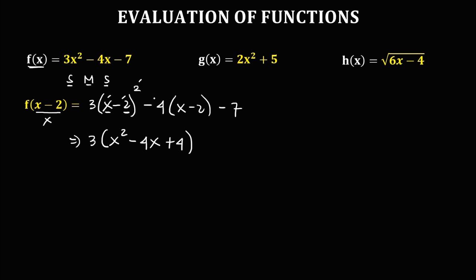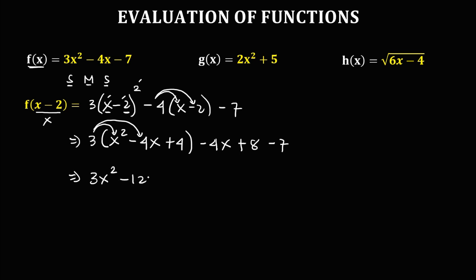For the next term, distribute negative 4: negative 4 times x is negative 4x, and negative 4 times negative 2 — negative times negative — is positive 8. Then bring down negative 7. Now distribute the 3: 3 times x squared is 3x squared, 3 times negative 4 is negative 12x, and 3 times 4 is positive 12. Then copy negative 4x, plus 8, minus 7.